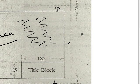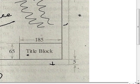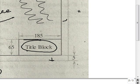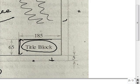A drawing sheet also contains a title block. A rectangle of 185 mm in width and 65 mm in height is said to be a title block. In the title block it consists of the name of the institute, name of the student, class, roll number, year, title of the drawing, date of submission, etc.